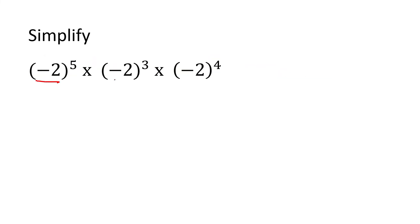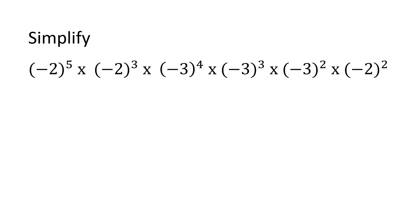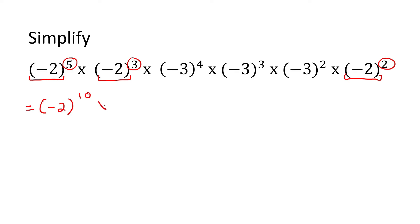Here we have the base the same — so when that happens, leave the base, then add exponents: 5 plus 3 is 8, 8 plus 4 is 12. Well done, guys. Now, here we have minus 2, but then it changes to minus 3, but then we have minus 2 again. So all of those minus 2s have the same base. When the bases are the same, leave the base as minus 2, and add the exponents: 5 plus 3 is 8, 8 plus 2 is 10. Then multiply, and look at the minus 3s: 4 plus 3 is 7, 7 plus 2 is 9.